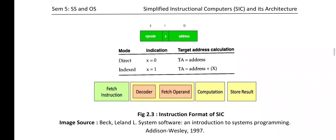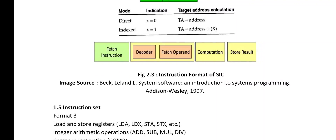In figure 2.3, the instruction format of SIC is shown. If it is in direct mode, X value is 0 and the target address equals just the address. When it is indexed addressing mode, the X value is 1, and to calculate the target address you add the address along with the X register value. The opcode occupies 8 bits, the X bit occupies 1 bit with value either 0 or 1, and the address part needs 15 bits of information.